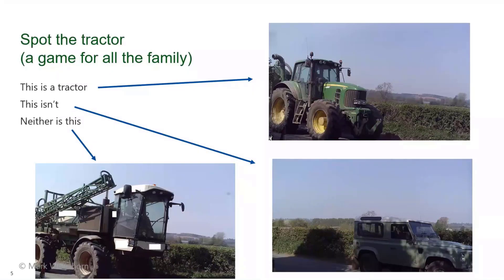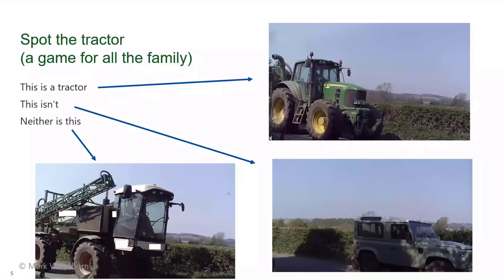This has become a game called 'spot the tractor.' Top right is a tractor. Bottom right is a Land Rover Defender - not a tractor. Bottom left looks like a tractor, but in this particular definition it isn't, because it's not shipping material to or from the digester. When building a machine learning system to spot tractors, it doesn't have to match what you or I would think of as a tractor - it can be very specific.